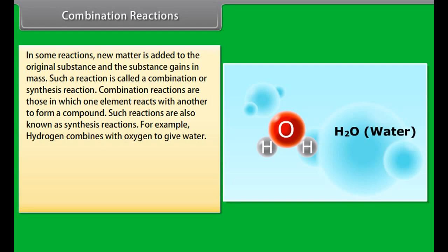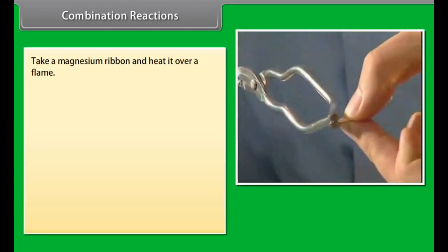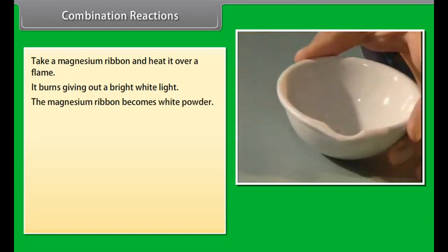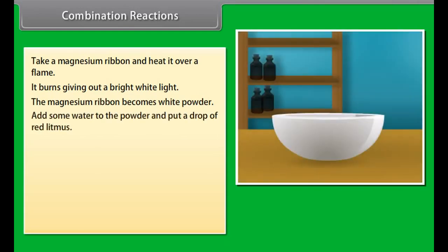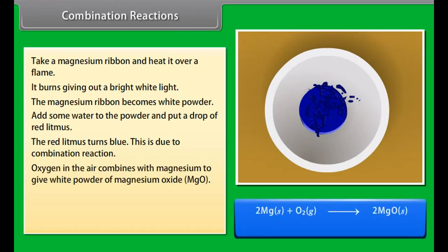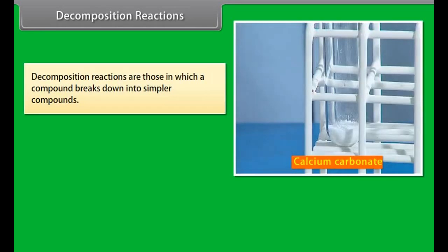Combination reactions: In some reactions, new matter is added to the original substance and the substance gains in mass — such a reaction is called a combination or synthesis reaction. Combination reactions are those in which one element reacts with another to form a compound. For example: 2H₂ + O₂ → 2H₂O; 2Cu + O₂ → 2CuO; 4Fe + 3O₂ → 2Fe₂O₃ (rust).